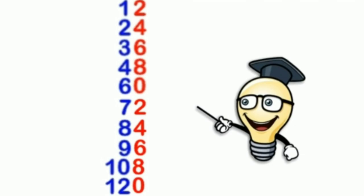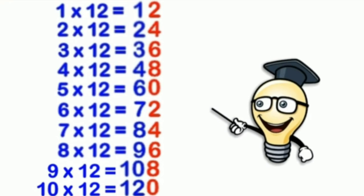As soon as you are done with this, you will find that you have the table of 12: 12, 24, 36, 48, 60, 72, 84, 96, 108, and 120. So the complete table of 12 is: 12 ones are 12, 12 twos are 24, 12 threes are 36, 12 fours are 48, 12 fives are 60, 12 sixes are 72, 12 sevens are 84, 12 eights are 96, 12 nines are 108, and 12 tens are 120. I think the method of writing the table of 12 is clear to you.